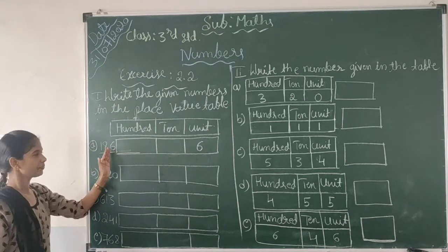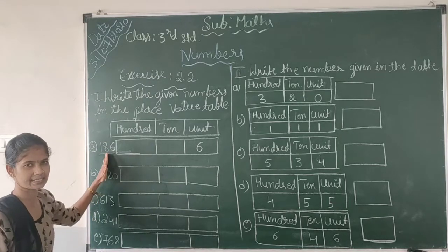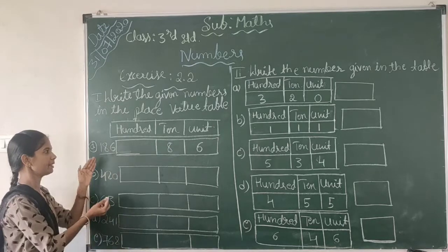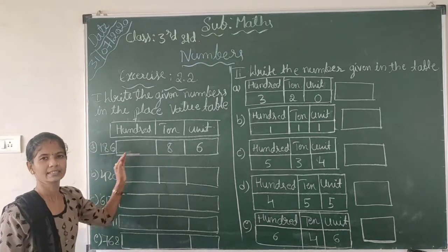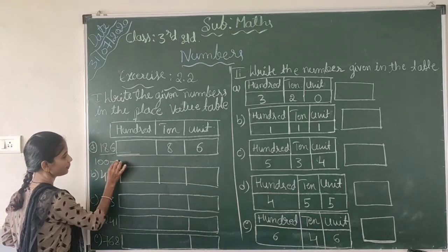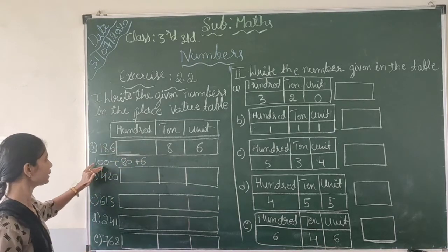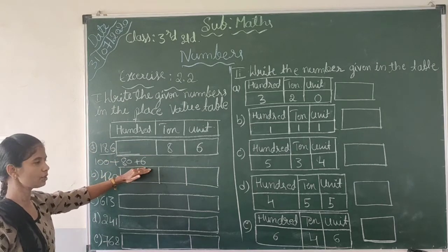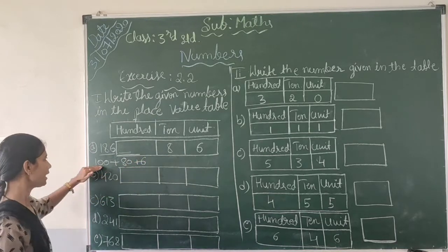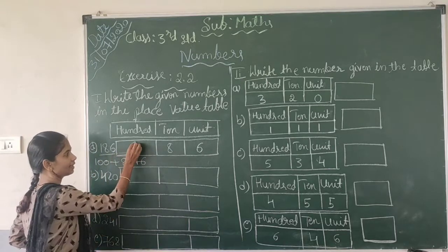Before 6 comes 8. We can expand 186 as 100 plus 80 plus 6. So: 6 is in the units place; 80 means 8 is in the 10's place; and 100 means 1 is in the 100's place. Got it now? So 1 is in the 100's place.